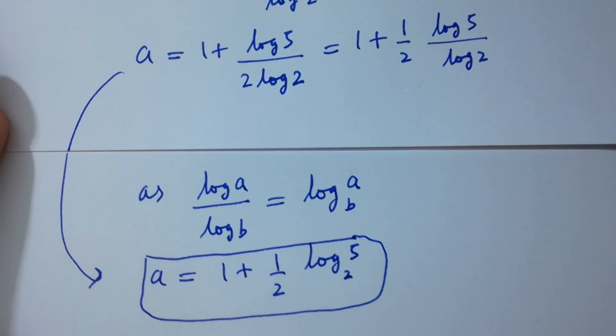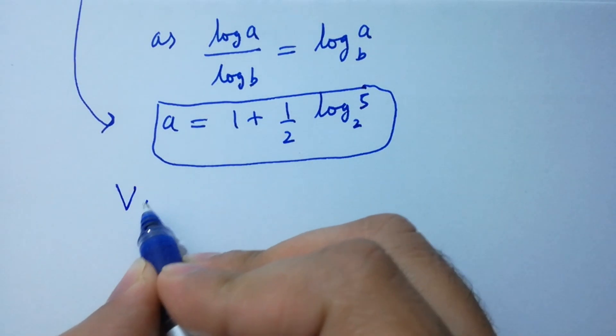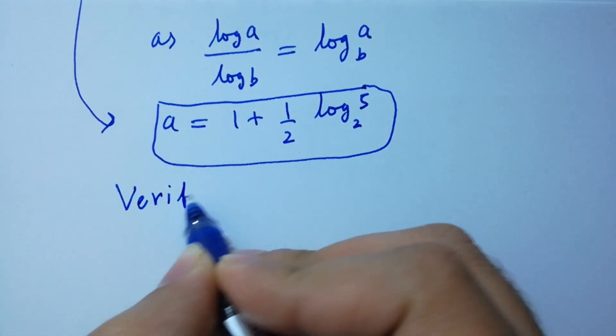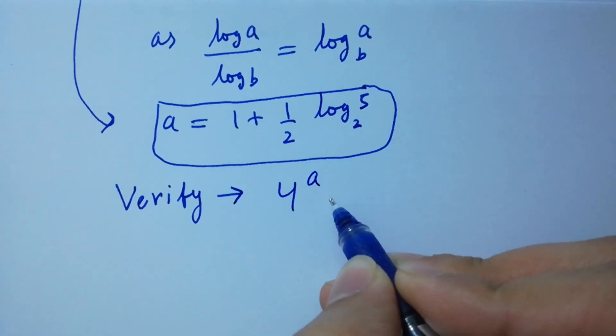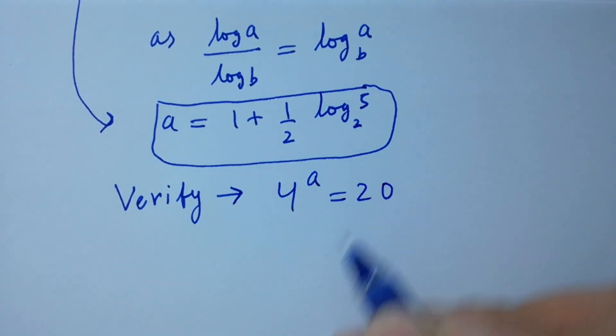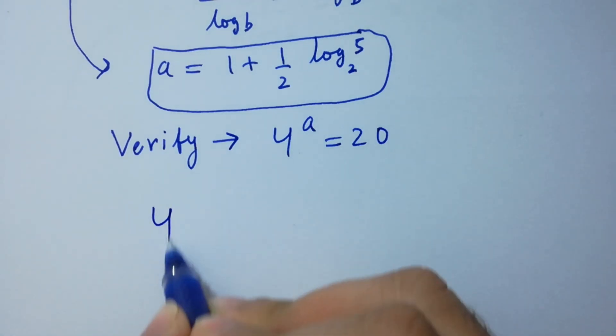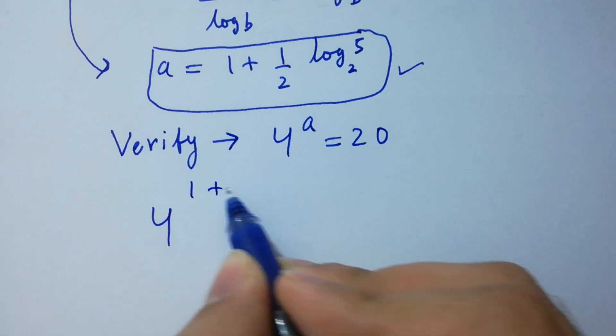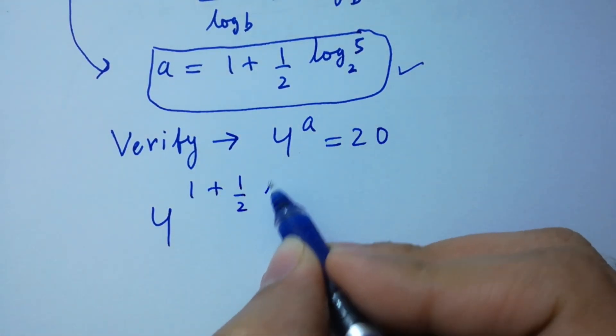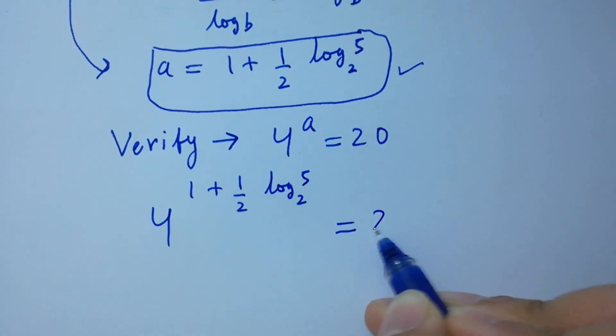In the next step, I am going to verify. 4 to the power A equals 20. Put the value here: 4 to the power 1 plus 1 over 2 log 5 to the base 2 equals 20.